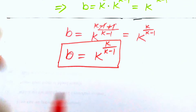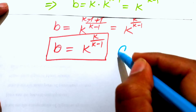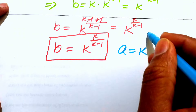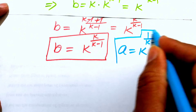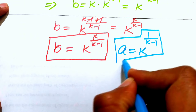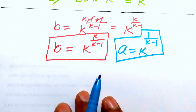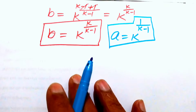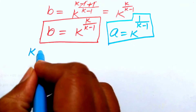So the general values are: a equals k to the power of one over (k minus one), and b equals k to the power of k over (k minus one). To find particular values, we substitute k equals two, three, four, five, and so on.